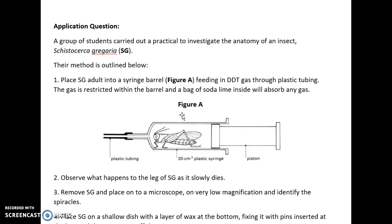Here's a question that I've created using a practical. The practical uses the context of an insect dissection. The question says that a group of students carried out a practical to investigate the anatomy of an insect. If they were to give a question like this with the method, I'd suggest reading through and highlighting it, make sure you understand what's happening, and try and think which parts they could ask questions on. It says to place the SG, the adult insect, into a syringe barrel feeding in DDT gas through plastic tubing. The gas is restricted within the barrel, and a bag of soda lime will absorb any gas.